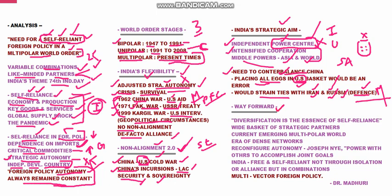The way forward is that diversification is the essence of self-reliance. We need to diversify our stands and cannot take just one position. We have a wide basket of strategic partners and must continue this policy. The world is emerging into a multipolar era of dense networks — strategic partnerships, bilateral partnerships, defense partnerships and exercises. We have to participate according to our interests and the interests of our neighbors.